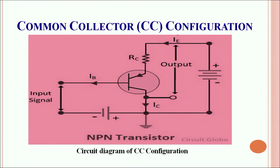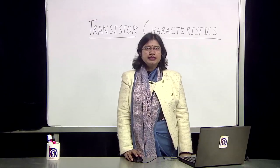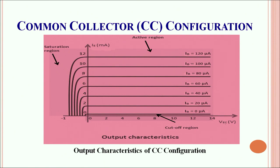Let's have a look at the output characteristics of the common collector configuration. What we plot here is the emitter current as a function of the output voltage. There is a small amount of increase in the current and soon it attains a saturated value, saturated in the negative side of the voltage. The cutoff region is very soon attained, and this particular configuration is practically suited for only impedance matching.